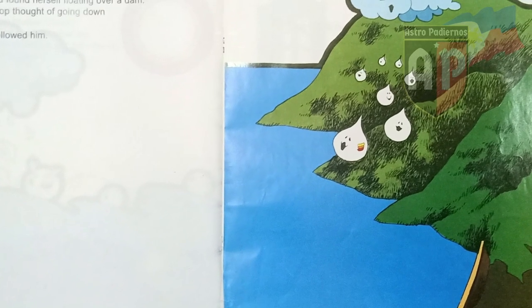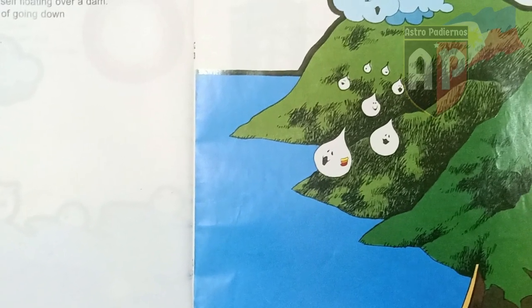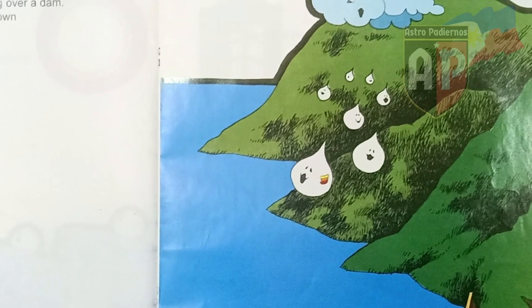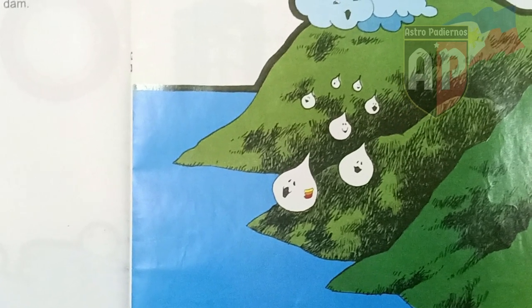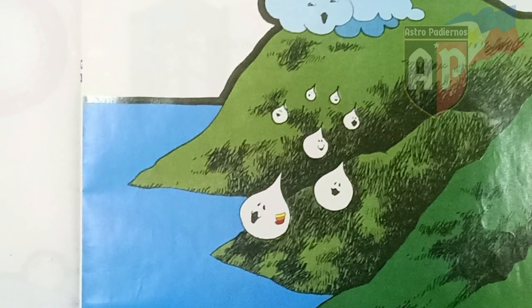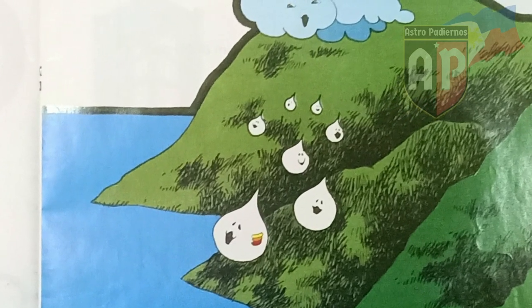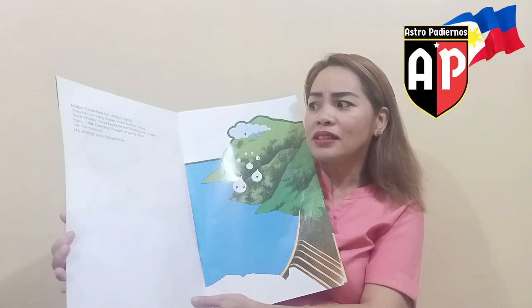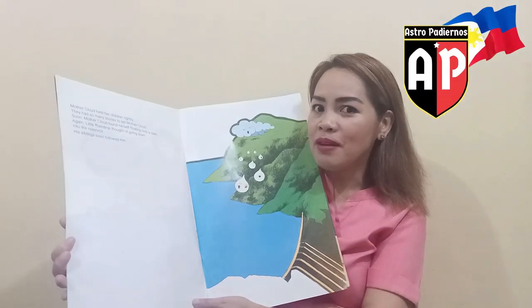Mother Cloud held her children tightly. They had so many stories to tell Mother Cloud. Soon, Mother Cloud found herself floating over a dam. Again, Little Raindrop thought of heading down into the reservoir, and his siblings soon followed him.